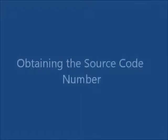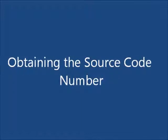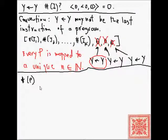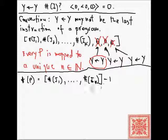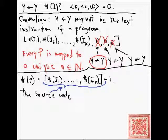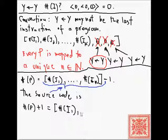Let's focus on the task of obtaining the source code number. We're given the number of the program, and that number by definition is the Gödel number where each element encodes the corresponding instruction in terms of the power of the corresponding prime minus one. The source code number is equal to the number of the program plus one, and that gives us the value of that Gödel number.